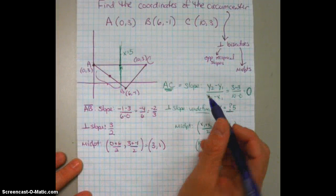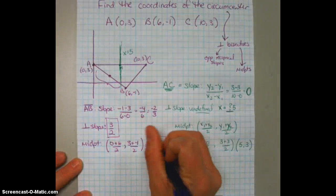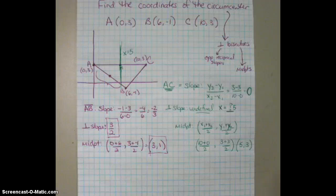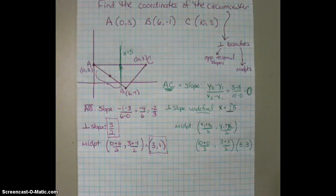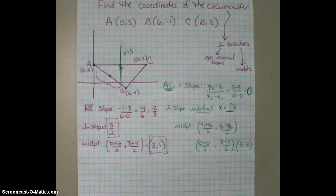So the perpendicular bisector is going to have this slope of 3 halves passing through this midpoint. So what we need to do is figure out, okay, well, what's the equation of that line? Because then we can find the intersection of those two lines to then figure out the circumcenter.